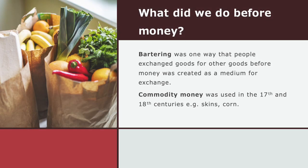So what did we do before money? Bartering was one way that people exchanged goods for other goods before money was created as a medium of exchange. Commodity money was used in the 17th and 18th century — we exchanged commodities, which are basically raw materials, such as animal skins, corn, coffee, and so on.